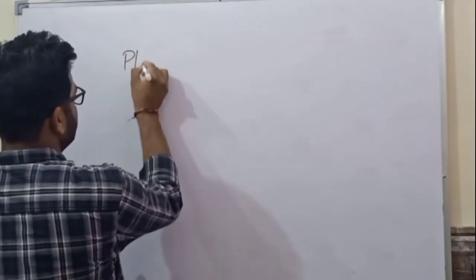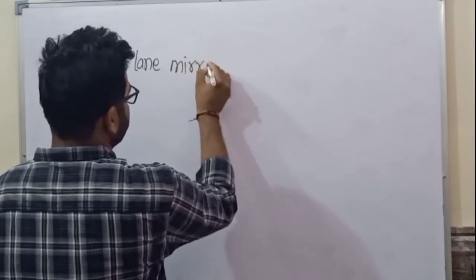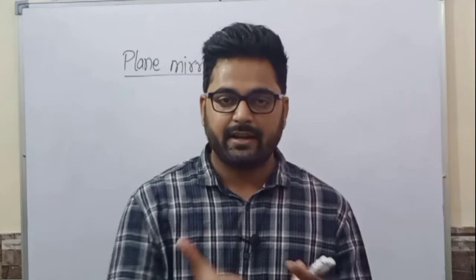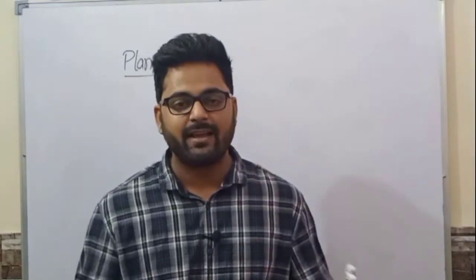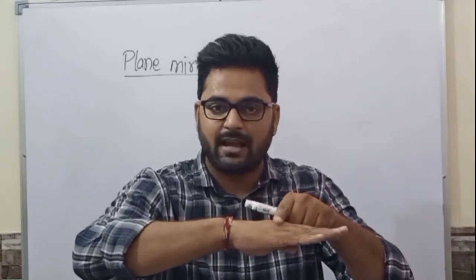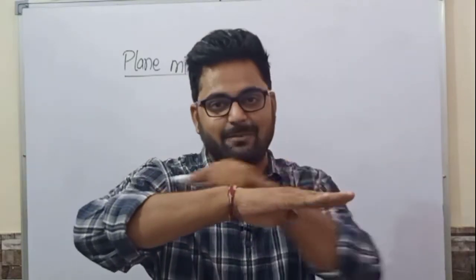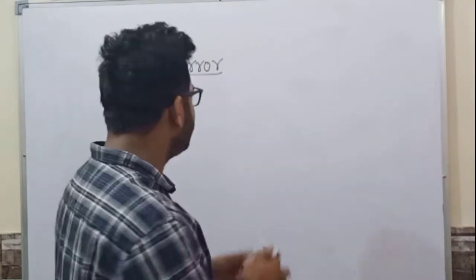So students, in case of mirrors, let's start with plane mirror. A plane mirror is a plane reflecting surface — any surface which is capable of performing reflection. In reflection, light strikes the surface and bounces back in the same medium; it is like a border where light cannot pass through. That is what we call reflection.